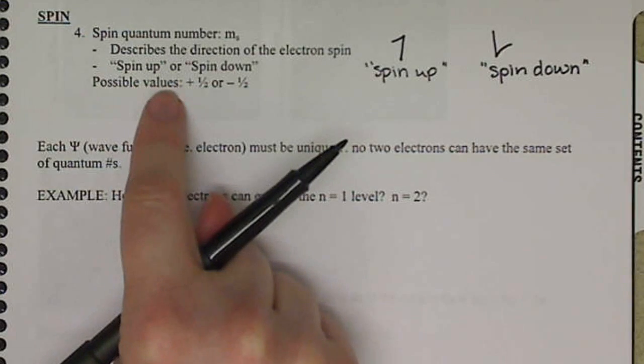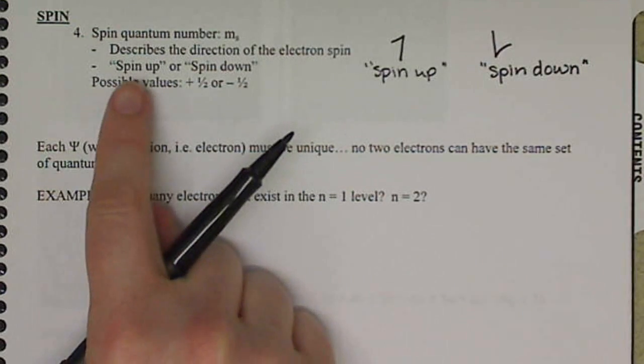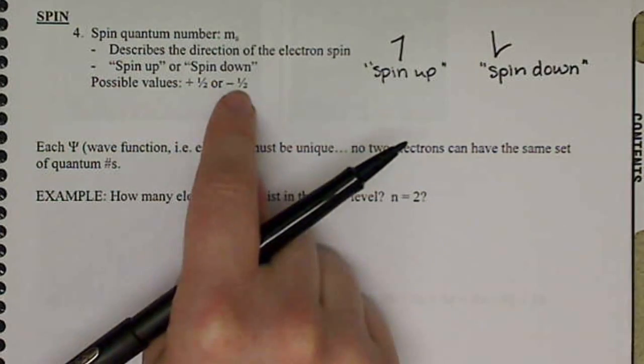And that's it for spin. Independent of the N, L, and M sub L values, M sub S can either be plus 1 half or minus 1 half.